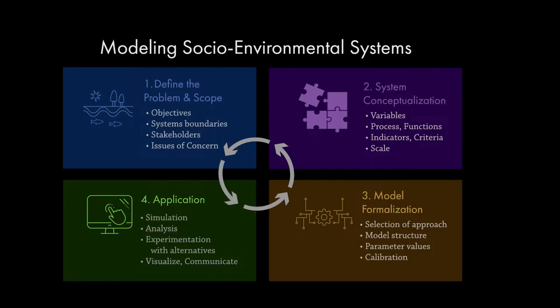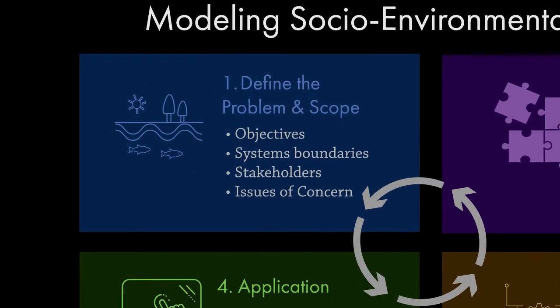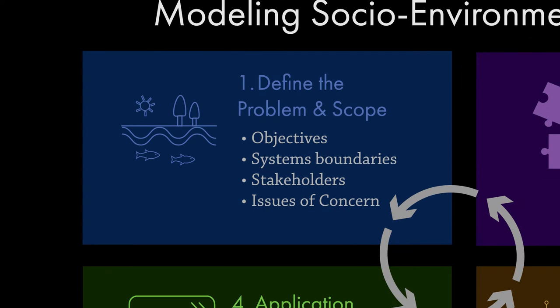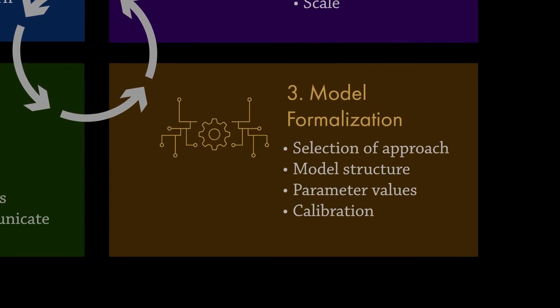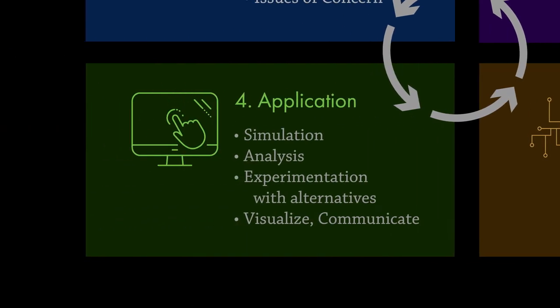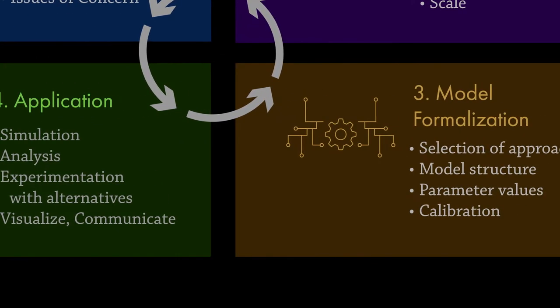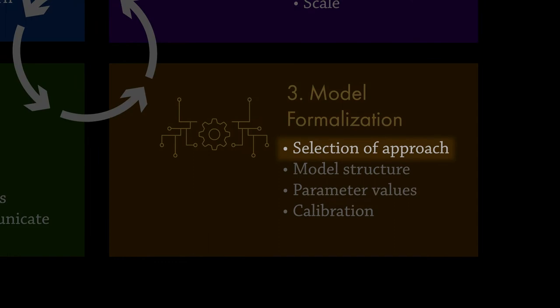In this webinar we examine the model selection process. Modelling is often described in terms of four main phases. The first is defining and scoping the problem; next is conceptualising the system, followed by formalising the model and finally applying it. The model selection phase sets the foundation of model formalisation. There are a large number of approaches that can be used to model socio-environmental systems, which can make the choice of approach a daunting task.